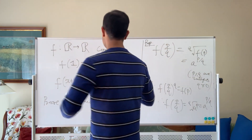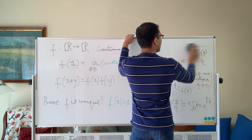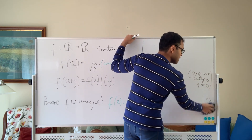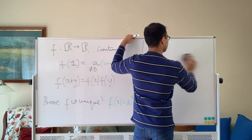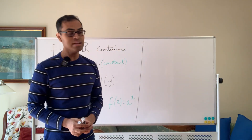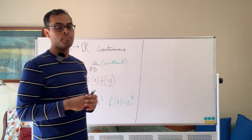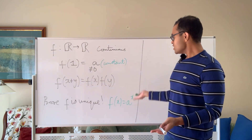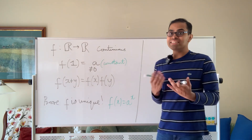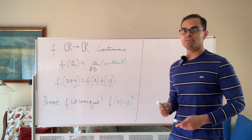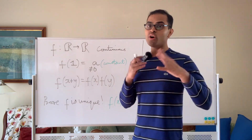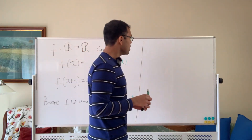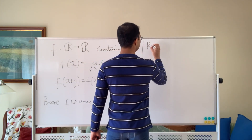Now we use continuity, because that's going to be important. The fact that f is continuous — without it, we can't say anything about f on the irrational numbers. If f were not continuous, we could possibly construct crazy functions satisfying this property. My question to you: can you find a function that is not aˣ, but satisfies this property and is discontinuous? Drop a comment below. But now finally, we can prove the theorem.